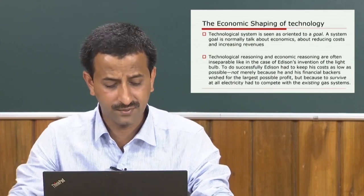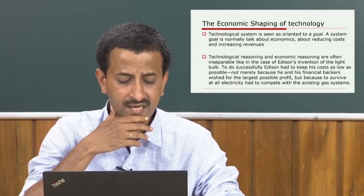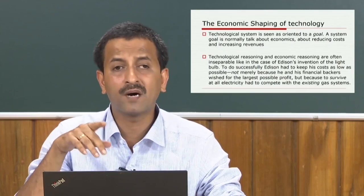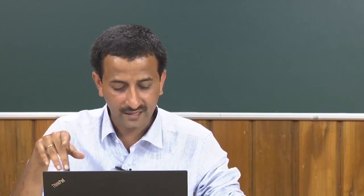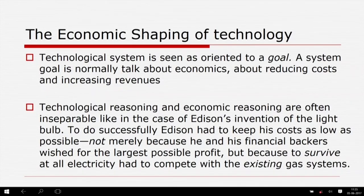Electricity supply systems, for example, have been private or public enterprises, and those who have run them have inevitably been concerned above all about costs, profits, revenues, or losses. The reverse salient is an inefficient or uneconomical component — for Thomas Hughes and for many practical purposes, inefficient means uneconomical.